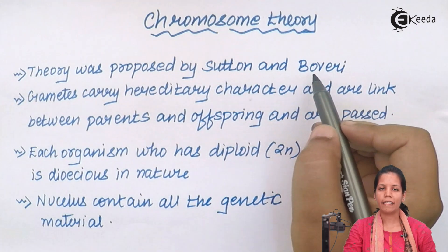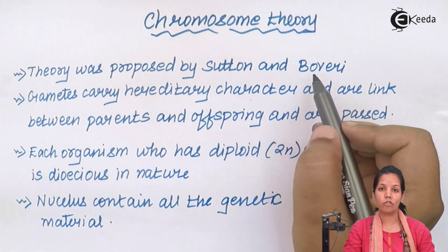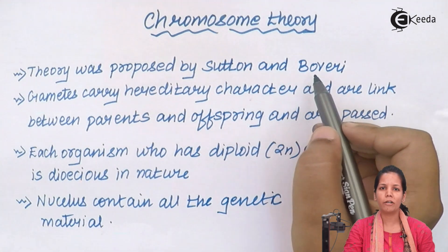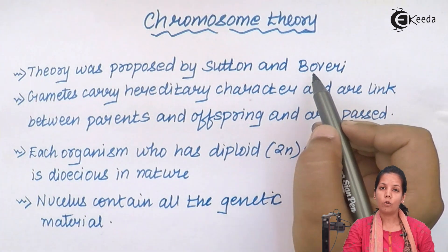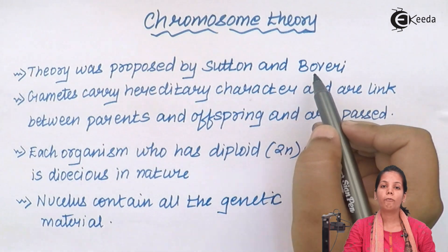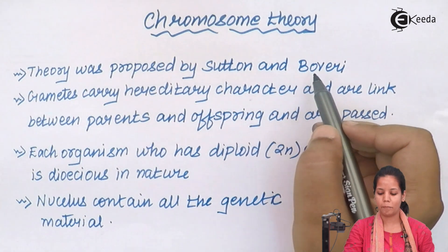We all know today that there are somatic cells and then there are germ cells. Somatic cells would include your eye cells, leg cells, and hand cells — those will have a total of 46 number of chromosomes, that is 23 in pairs.